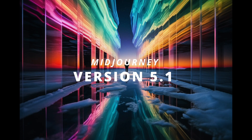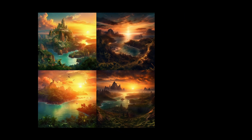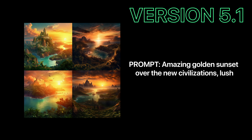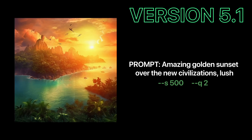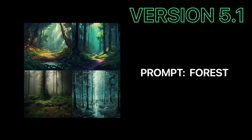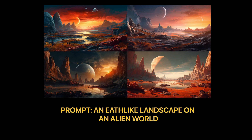Version 5.1 does a very good job with landscape photos. With the prompt 'amazing golden sunset over new civilizations,' adding stylize and quality parameters produced stunning images — just look at the bottom left. For 'an earth-like landscape on an alien world,' using a short prompt with chaos and quality made the images look absolutely amazing. The one on the bottom right is probably my favorite, as it looks very similar to Mars.